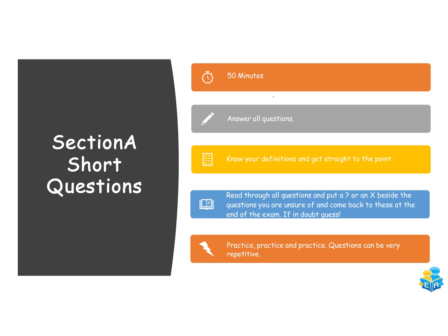Know your definitions and get straight to the point. Use that revision document to find keywords and definitions I've highlighted, sit down, find them in your notes, and learn them off by heart. There's no room for waffle in a science exam — examiners are looking for exact keywords and terms, and if you don't have those specific words, you won't get the marks. Read through all the questions, put a question mark or X beside the ones you're unsure of, and come back to them at the end. Make sure you put something down — don't leave them blank. And practice, practice, practice. Questions can be very repetitive — measurement, ecology, and density calculations generally come up. Practice them again and again using marking schemes to understand how they're marked.